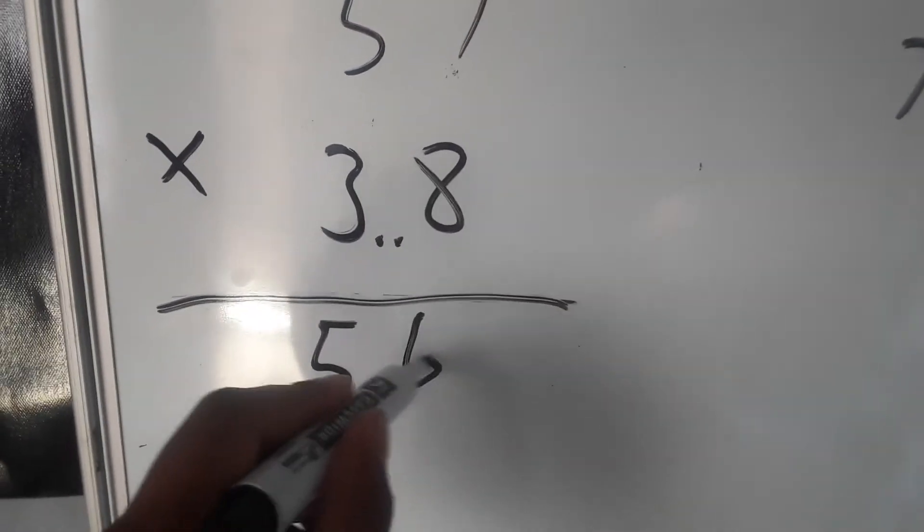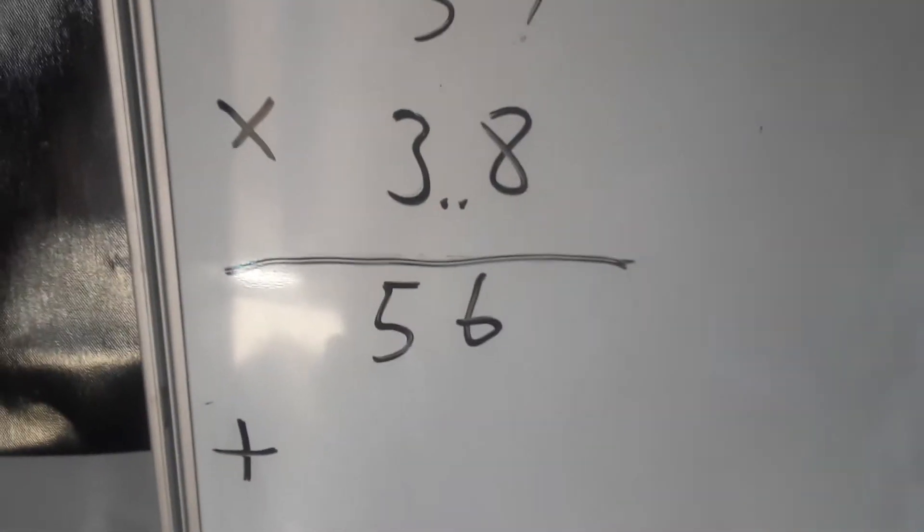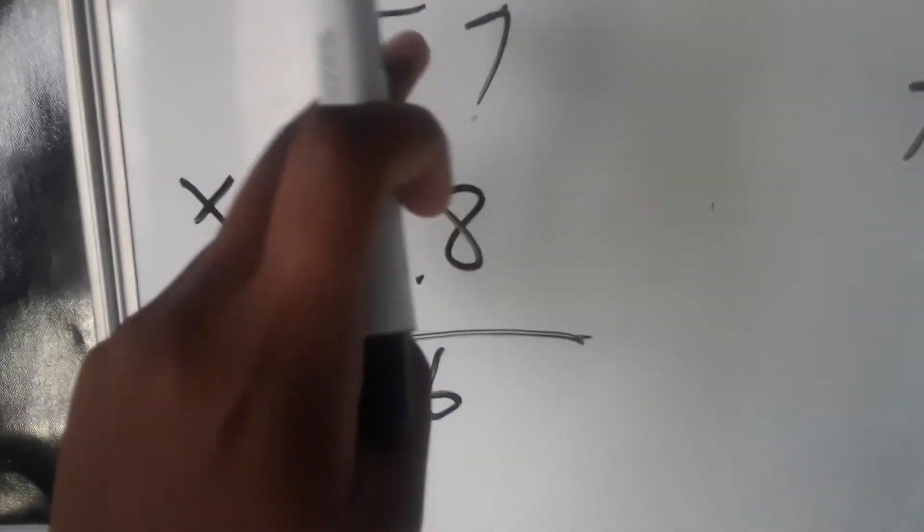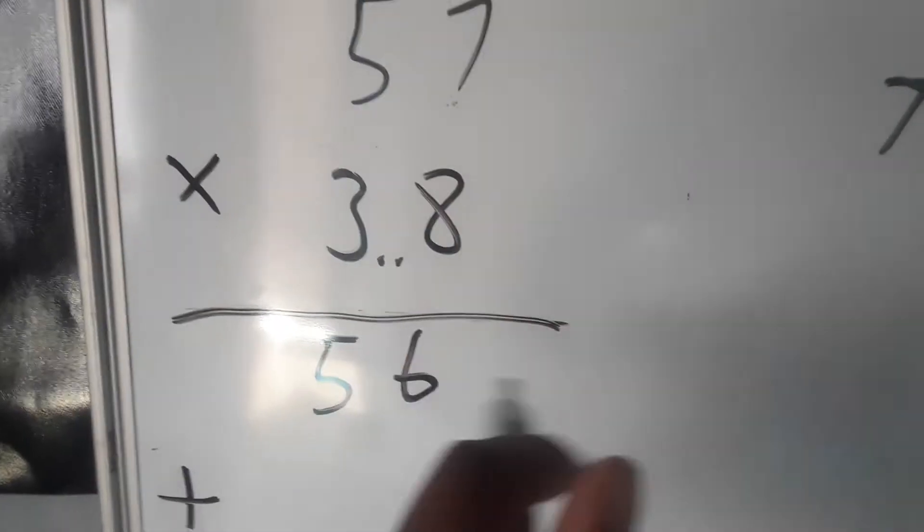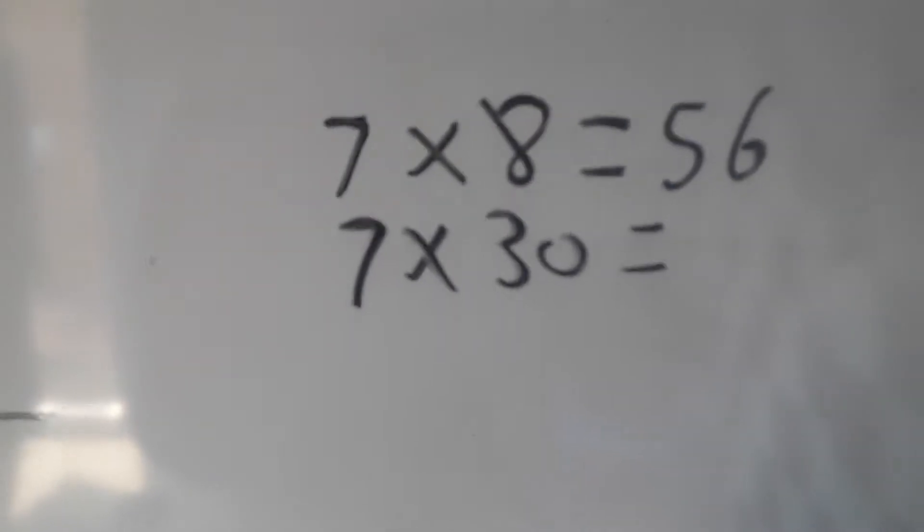We'll write this 56 down here and then everything will be added, the total will be added. And then we'll have seven times thirty because already eight we've multiplied, seven times thirty which is gonna give us...